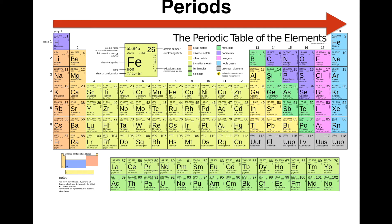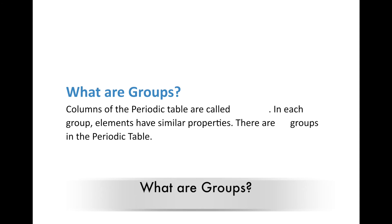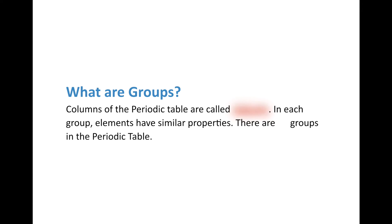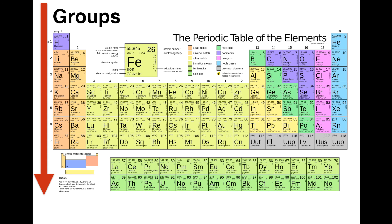Periods go across. Now, vertically, they're organized in what we call groups. Columns of the Periodic Table are called groups. In each group, elements all have similar properties, and they usually increase in intensity. As of right now, there are 18 groups in the Periodic Table. Vertically are the groups, so there are 18 going across, and in each of them you have similar properties — in group one, two, and so on through group 18.